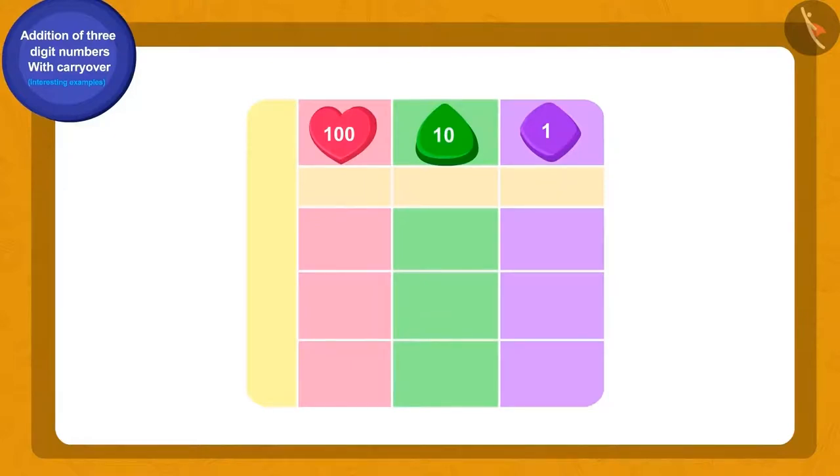First, we will write 359 and 235 using the carryover places of hundreds, tens, and ones like this. Is this right? What shall we do now? We will add numbers written in the place of ones. Add nine and five, and what do we get? 14.